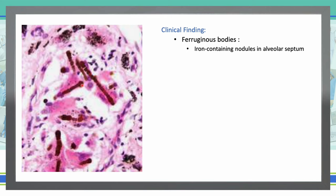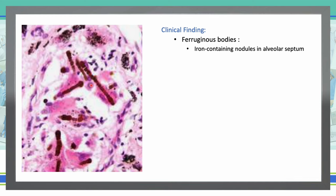Over here we have a ferrogenous body. This is your histological finding in interstitial lung disease that is a result of inorganic dust inhalation. Macrophage ingestion of the inorganic fiber results in a fibrotic reaction with encasement of the fiber in iron-rich material derived from proteins such as ferritin and hemosiderin. In the exam, they will not say ferrogenous body — they will say iron-containing nodules in alveolar septum. The diagnosis is asbestosis.